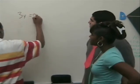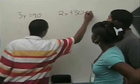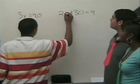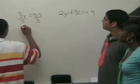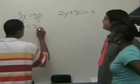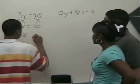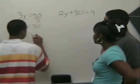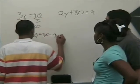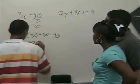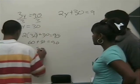3Y equals 90, and 2Y plus 30 equals 90. Alright, so the sum for Y — you divide by 3 on both sides, and Y equals 30. Alright, so now you incorporate 30 for Y in our second equation, and it's 2 times 30 plus 30 equals 90. Then you get 60 plus 30 equals 90, and then 90 equals 90.